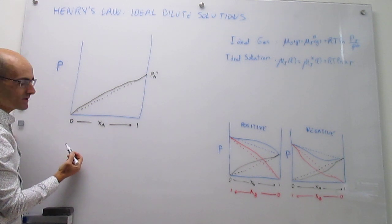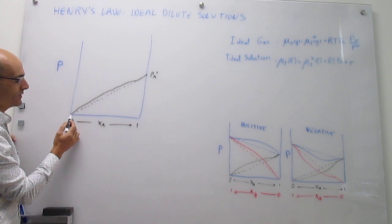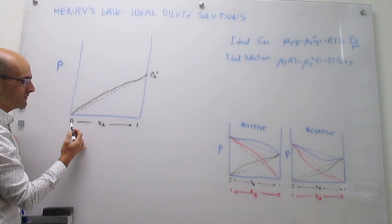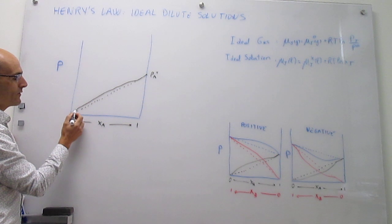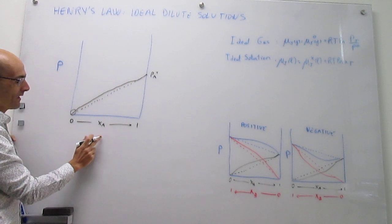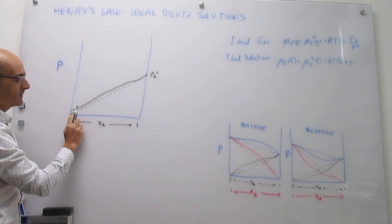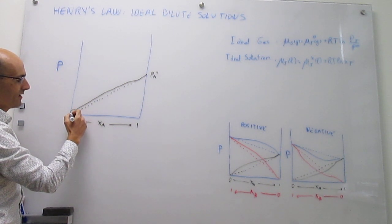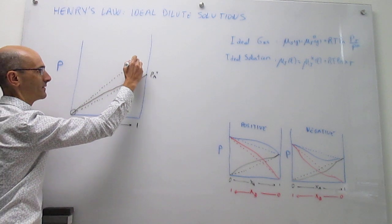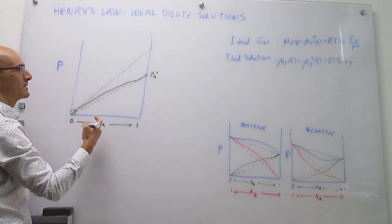It turns out that when you look at the other regime — really low concentrations of A, where A is no longer the solvent but instead the solute — you actually see a linear dependence of the vapor pressure with concentration as well. The problem is that the dependence is not Raoult's law; it is something different. You can trace another straight line here, and this linear relationship of vapor pressure on the composition of A is what we call Henry's law.